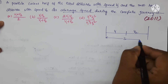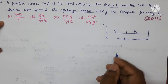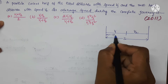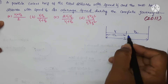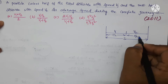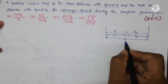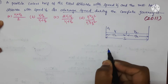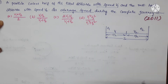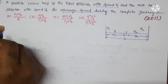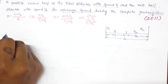Let the total distance covered by the particle be s. For the first half of the journey, the distance covered is s/2, and the remaining half is also s/2, so the total distance is s. For the first half of the distance, time is t1, and for the second half the time is t2. Now we have to find the average speed.